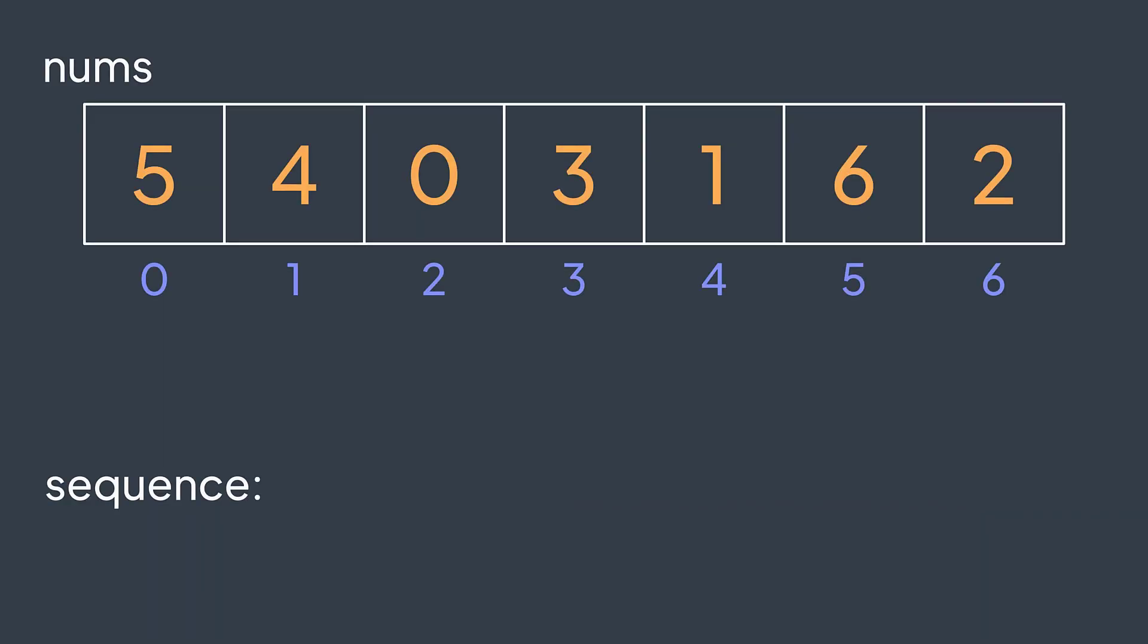For example, if we have this array, a possible sequence is to start from index zero, it contains element five, then go to index five because nums[0] is five, then go to index six because nums[5] is six, then go to index two because nums[6] is two, then go to index zero because nums[2] is zero. And here we went back to the starting point of the sequence.